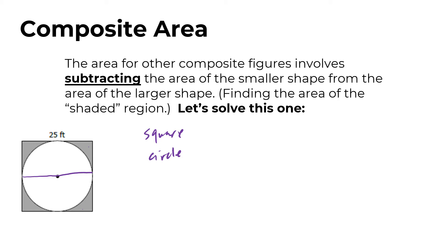The circle is exactly inscribed inside the square — it fits perfectly. Since the circle goes edge to edge horizontally, the diameter is 25. Since every diameter of a circle is the same length, the vertical diameter is also 25, meaning the square's side is also 25 — that's how we know it's a square. For the circle, we need the radius: the diameter is 25, so the radius is 12.5, which is half of 25. That's what we'll use in our formula.